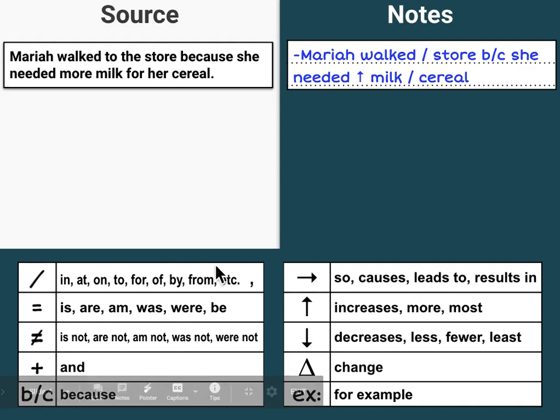See the dotted lines here — dotted lines are for notes only. Notice this is not a complete sentence. Mariah is capitalized because it is a name, not because it is the beginning of a sentence, and there's no punctuation at the end. Let's look at another example.